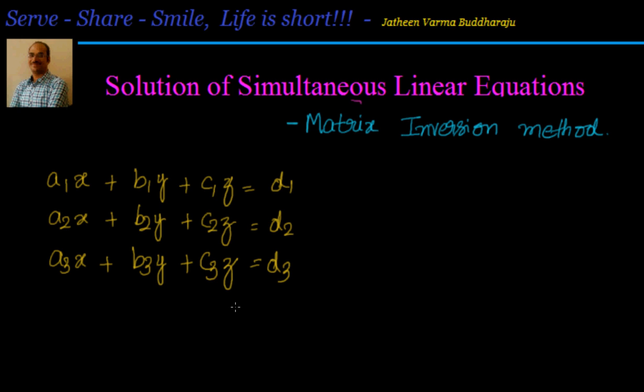We already know how to find out the inverse of a matrix. If we know there is a matrix A, we know how to find out its inverse. Now let's say these are the equations we have - three equations like what we take always. You know how you can write them in matrix format also.